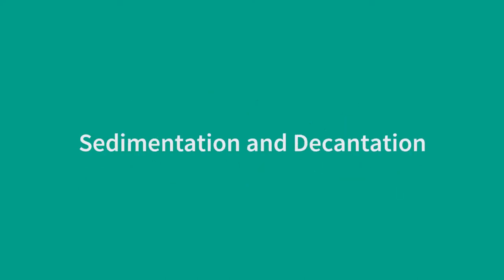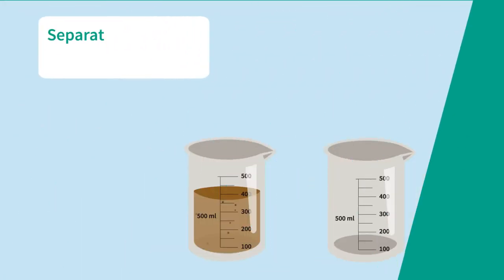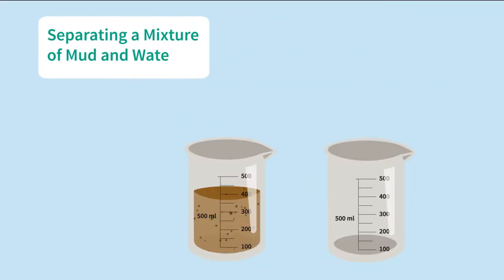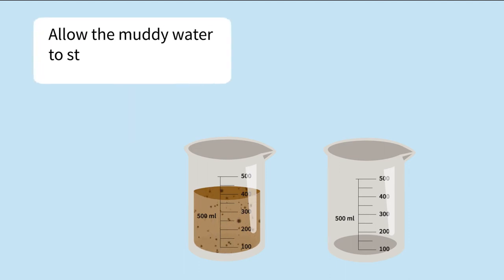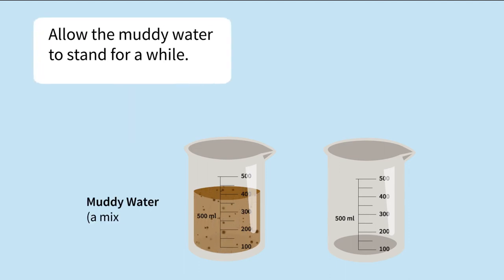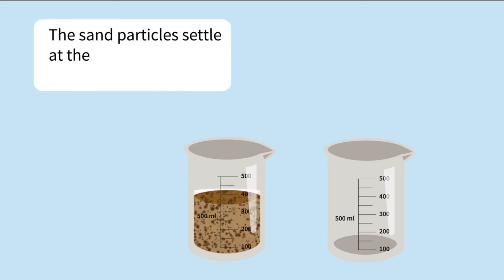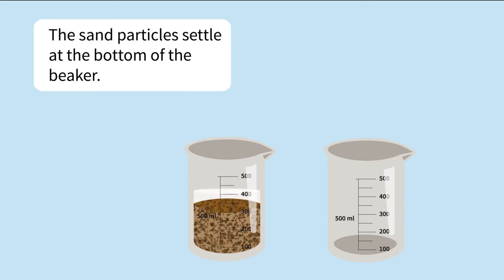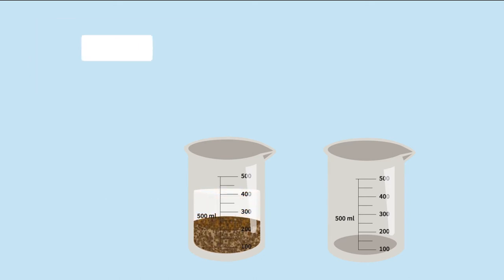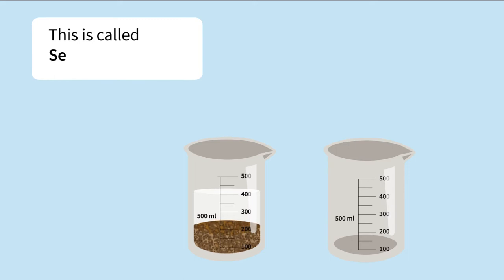Sedimentation and decantation: to separate a mixture of mud and water, allow the muddy water to stand for a while. The sand particles settle at the bottom of the beaker — this is called sedimentation.